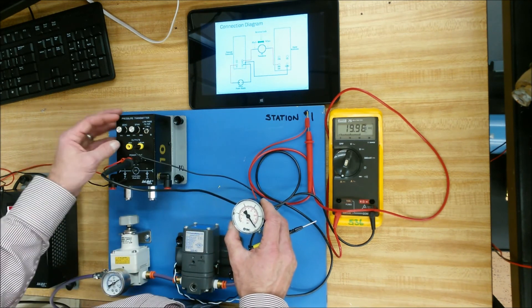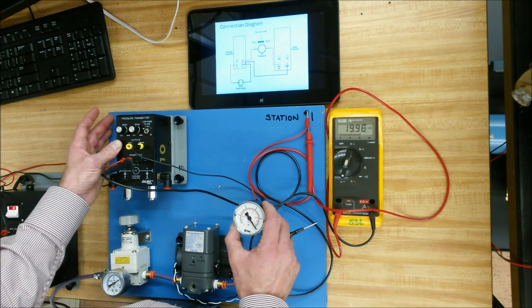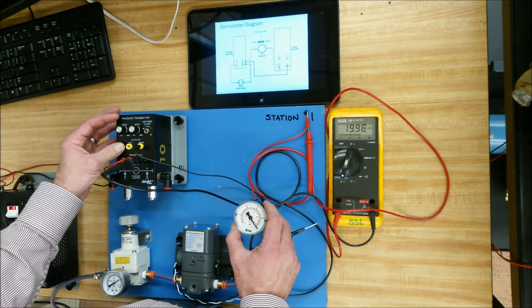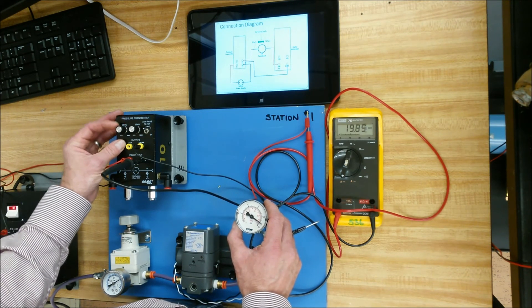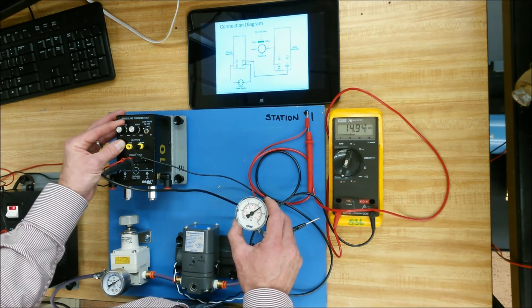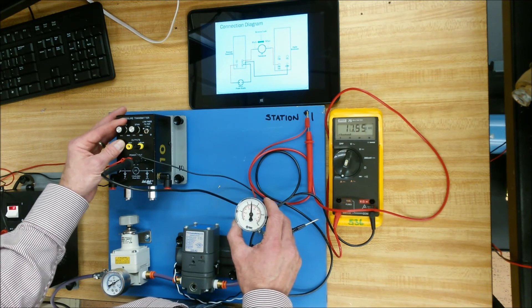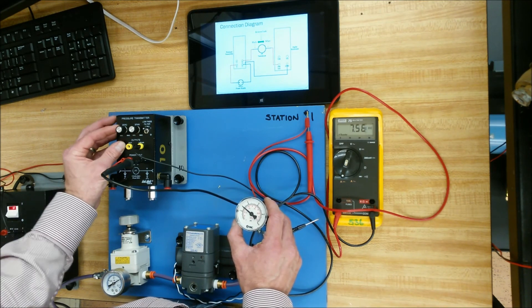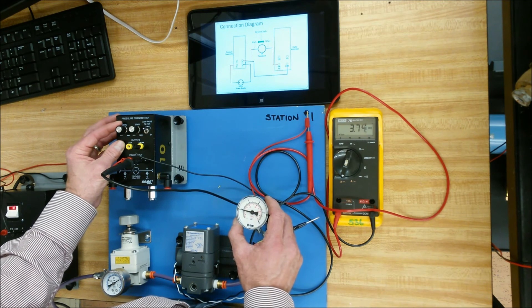As soon as you adjust the zero, you screw up the span. As soon as you adjust the span, you screw up the zero. So what we're going to do is we're going to go back down and recalibrate two or three times. This one was already pre-calibrated, so it should be fairly close.